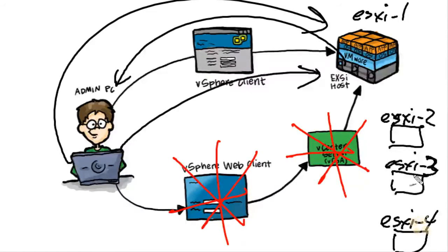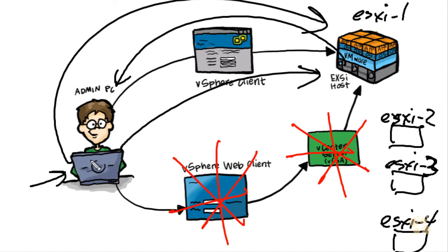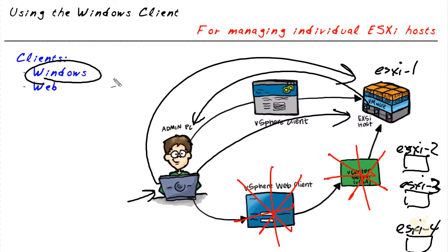If we had four different ESXi hosts, we would not have to download the Windows Client four different times. We simply download it once from any of the ESXi hosts, run it on our PC, and then individually — using that client — connect to the ESXi host of our choice to manage that individual ESXi host.